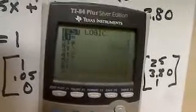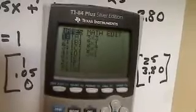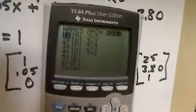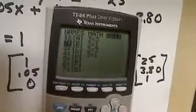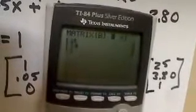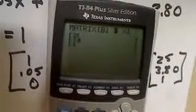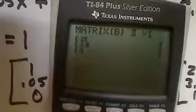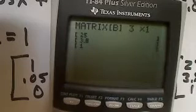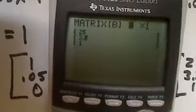Now I'm going to go back and in matrix B, go over to edit and scroll down to B. That's going to be a 3x1 — remember, that's the constant matrix. I've got 25 for the amount of coins, 3.8 for the dollars, and 1 in the matrix.